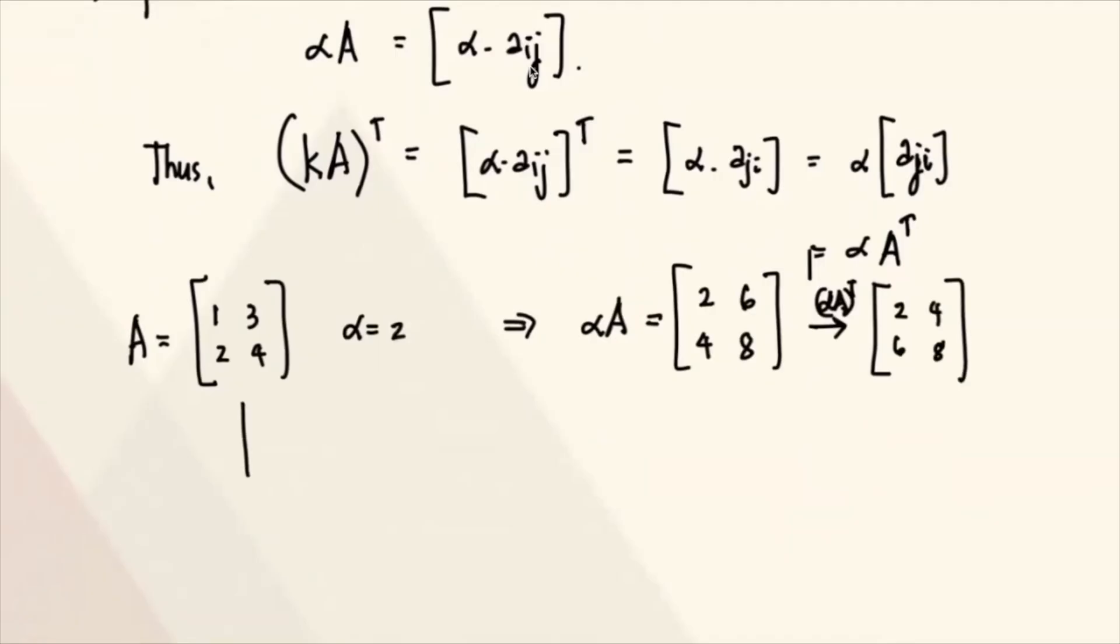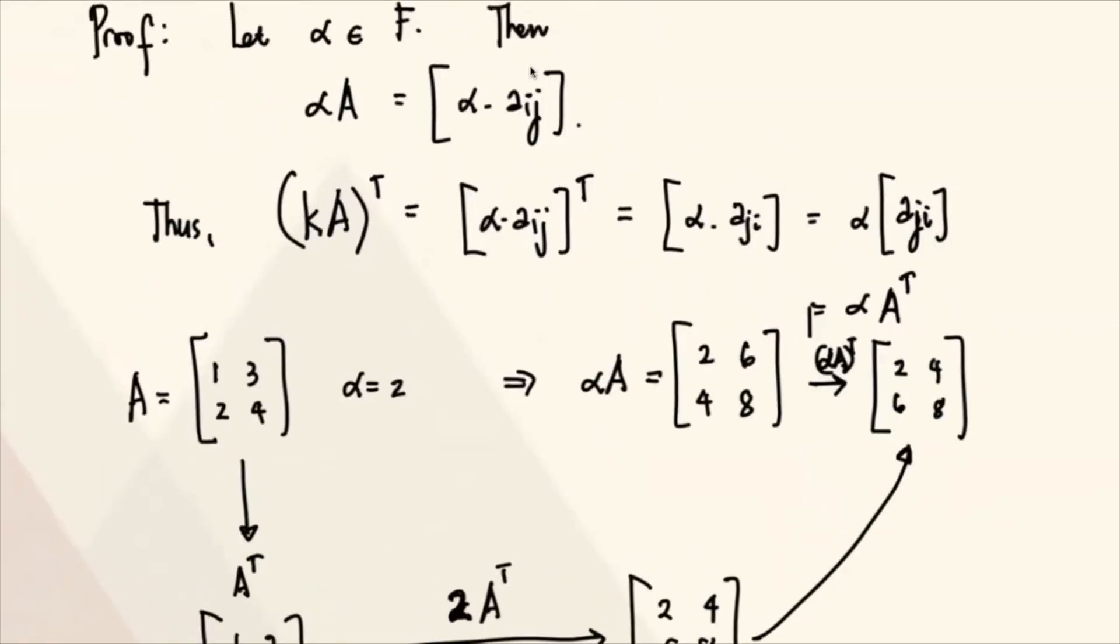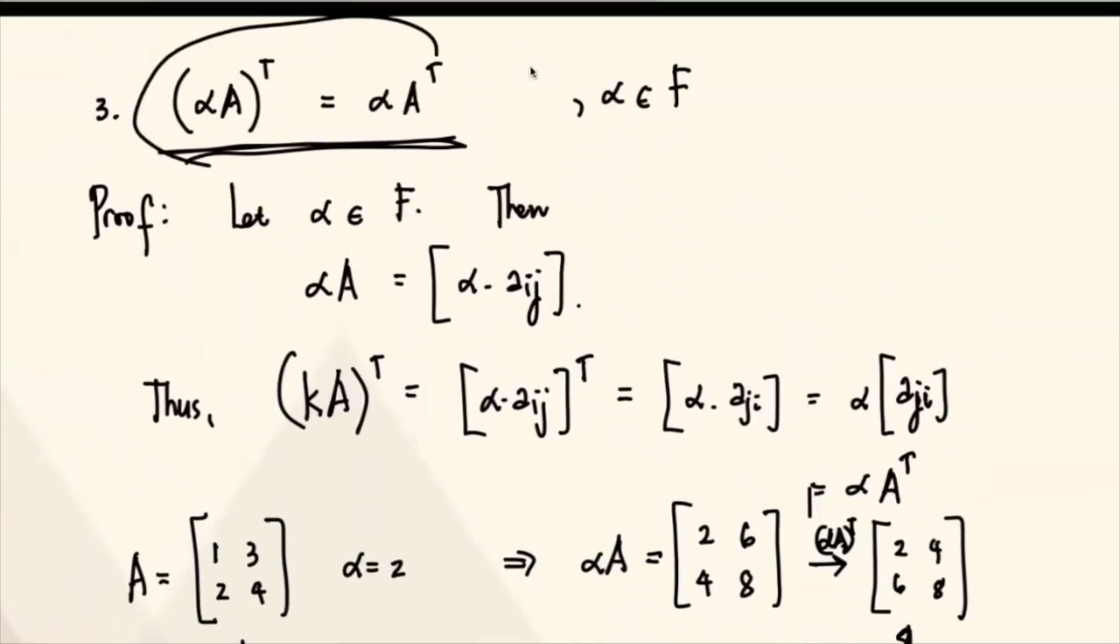Let's take the transpose of this. This is 1, 3, 2, 4. So let's say I have to multiply this. This is 2. So 2, 4, 6, 8, which is the same. So therefore, totoo ito, na claim na ito.